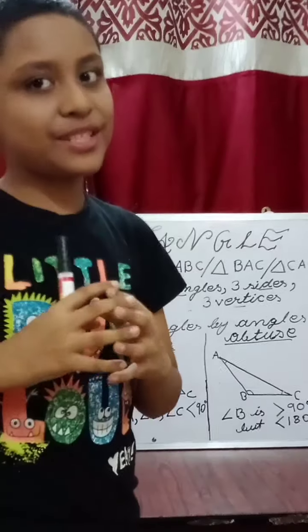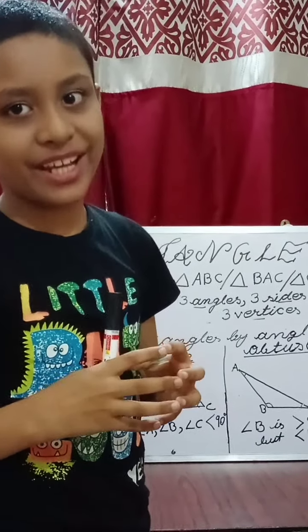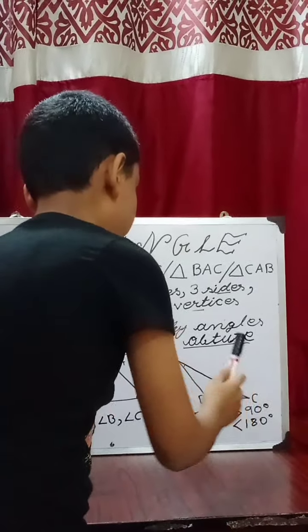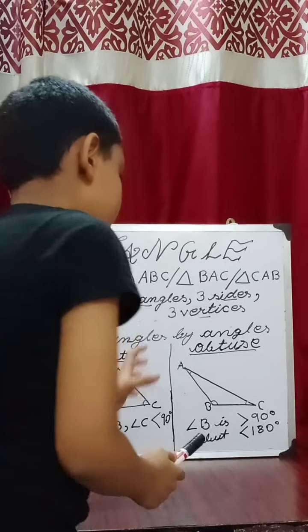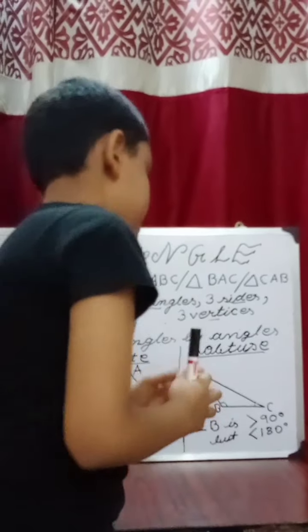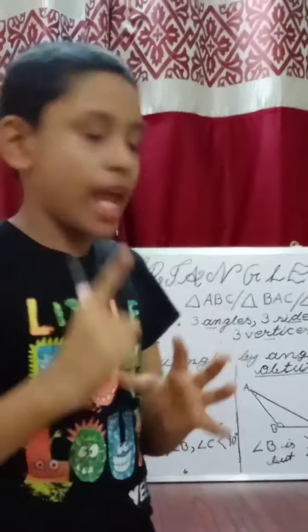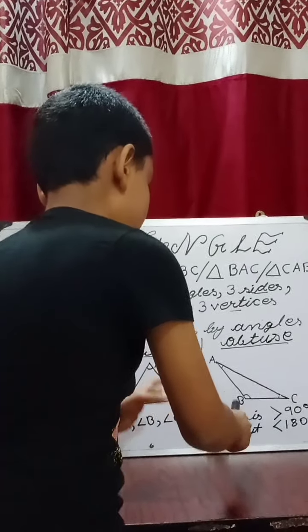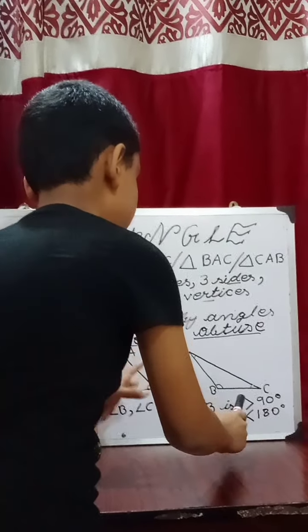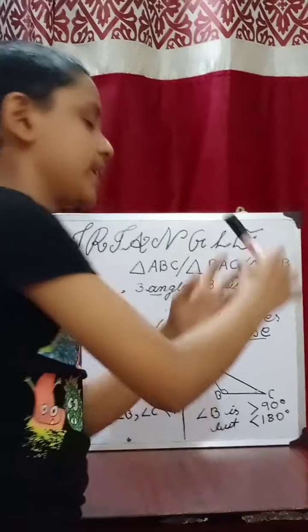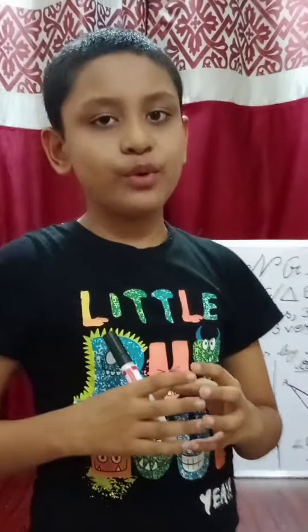Now let's move on to the obtuse angle triangle, which is the last triangle of today. An obtuse angle triangle is such a triangle which has one obtuse angle. Here, angle B is greater than 90 degrees but lesser than 180 degrees, which makes it an obtuse angle triangle.